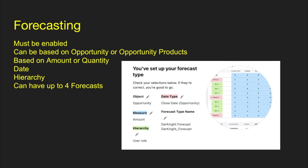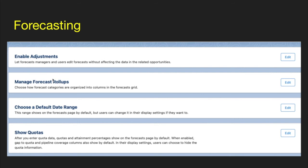Speaking of forecasting, you must enable it. It can be based on opportunity or opportunity products, and it can be based on amount or quantity. You can specify the date and also the hierarchy — typically it uses the role hierarchy. One thing to note: you can only create up to four forecasts. You can always come back and adjust them; they're not set in stone. You can delete old ones if you're not using them to create new ones. You also have to enable adjustments, and if you want to manage forecast roll-ups or change the default date range, you can enable those as well.